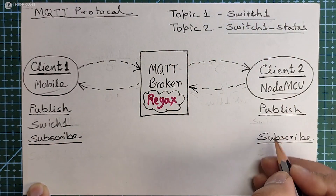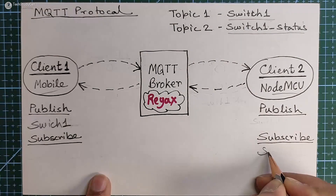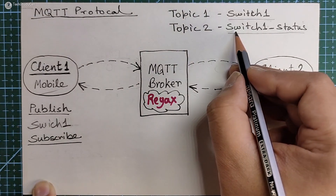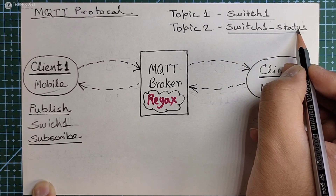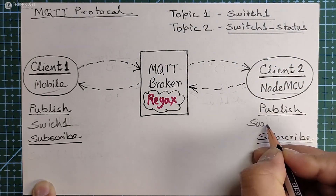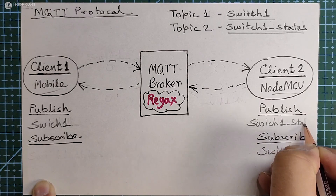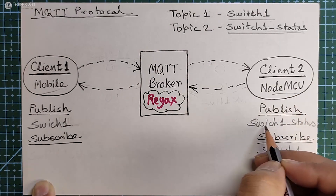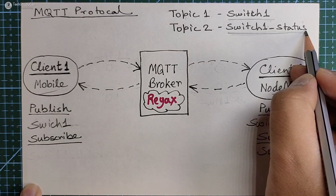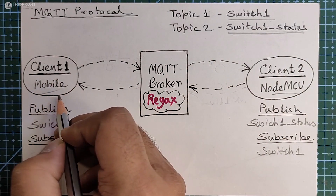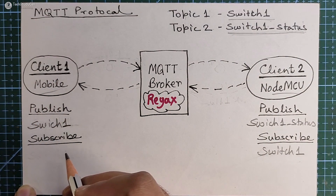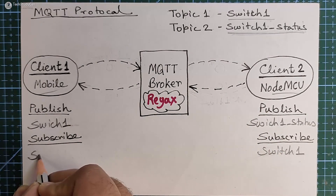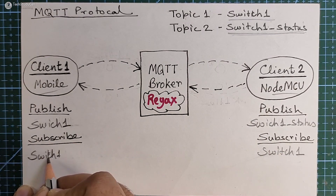Client 2 can receive the data coming from the switch1 topic. And client 2 can also publish data on the switch1 status topic. As NodeMCU can publish data on switch1 status topic, our mobile phone can receive the data on switch1 status topic.